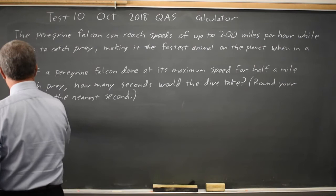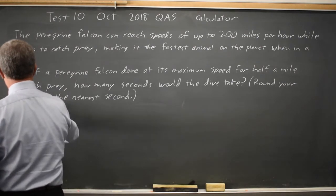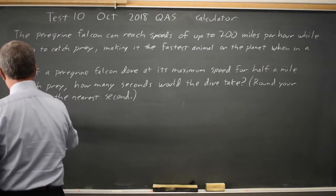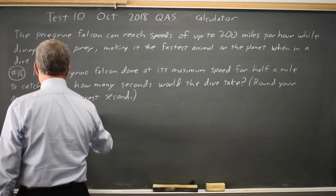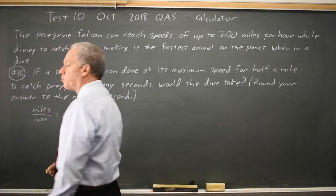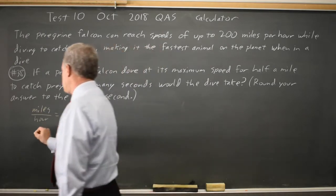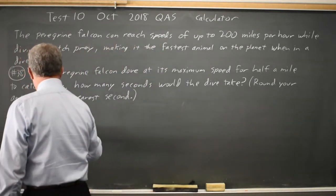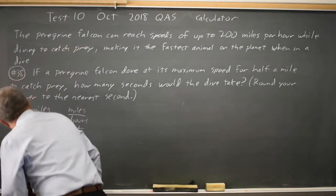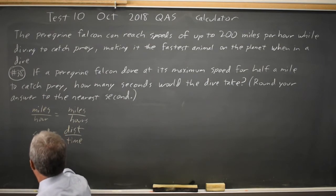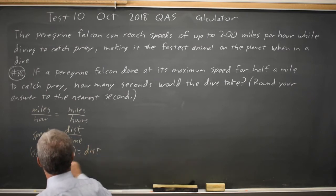We have our speed in miles per hour equals your number of miles over your number of hours. Pretty much by definition that should make sense. Speed equals distance over time, or speed times time equals distance, or time equals distance over speed.